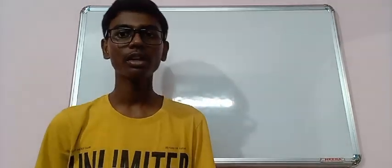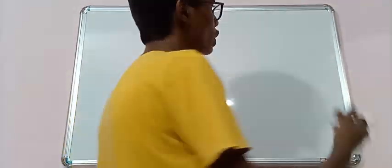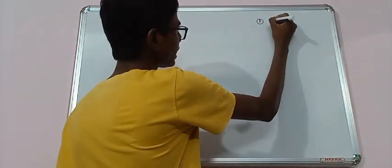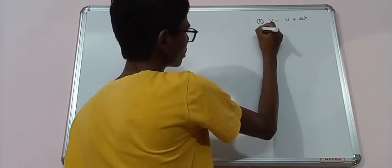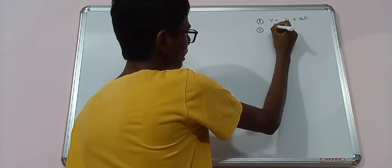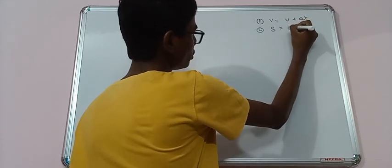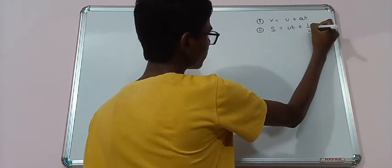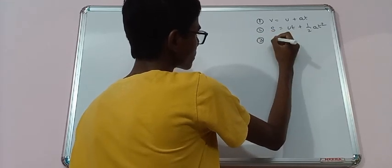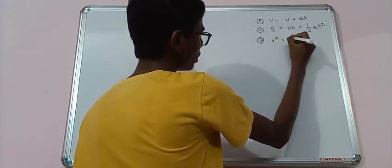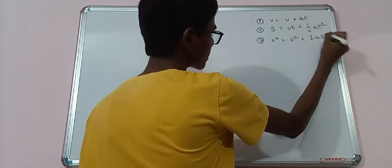So let's begin with our today's topic that is deriving the three formulas in the way of definition. So the three formulas is V equals to U plus AT. Second formula is S equals to UT plus half AT squared. And the third formula is V squared equals to U squared plus 2AS.